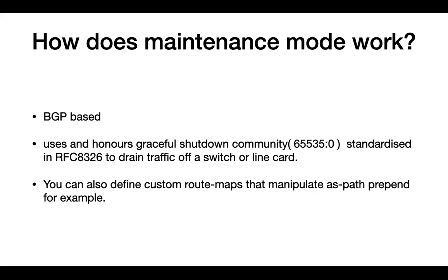Maintenance mode is mostly BGP-based. It uses and honors the graceful shutdown community. So if you have a layer 3 network running BGP, you can use maintenance mode to drain traffic from a switch by setting the graceful shutdown community on your outbound prefixes, and any devices that have a BGP peering with that switch set local preference to 0. Traffic doesn't get sent to the switch that has maintenance mode configured. You could also define custom route maps that manipulate AS-path prepend, but the default route map on your Arista switch matches the G-SHOT community and sets the local preference to 0.